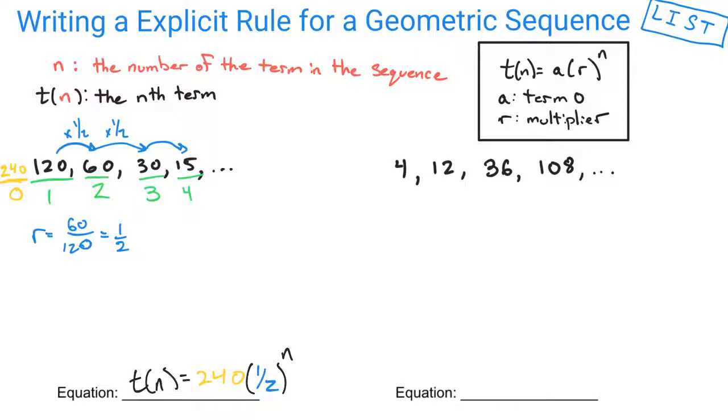As we take a look at another example, if I asked you what is term 1, you would say that that is 4, and term 2 is equal to 12. And I like to underline them, so this is term 1, this is term 2, 36 is term 3, 108 is term 4.